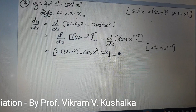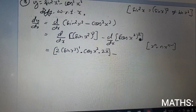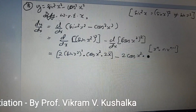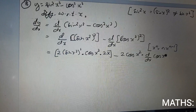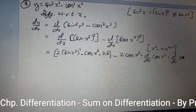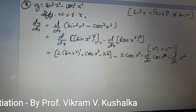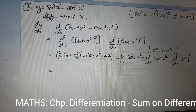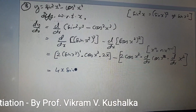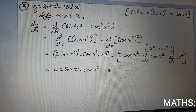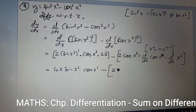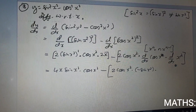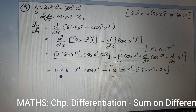For the second term, we first differentiate the power function: (cos x²)² gives 2·cos x². Then applying the chain rule, we differentiate cos x², which gives minus sin x², multiplied by the differentiation of x², which is 2x. Remember, this entire term is one bracket.